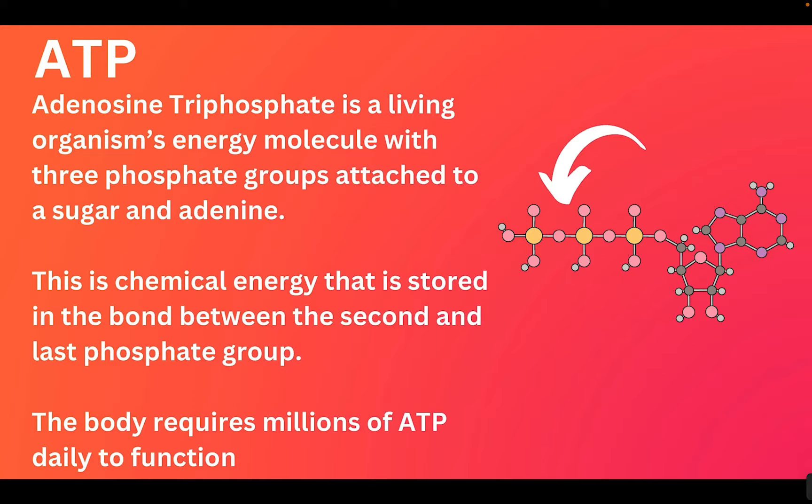That single bond is going to be the amount of energy we consume with one ATP. Therefore, the body requires millions of ATP in a single day to function, because this is a small burst of energy. We need a constant production of ATP in order to survive, since this molecule is our energy source for all functions.